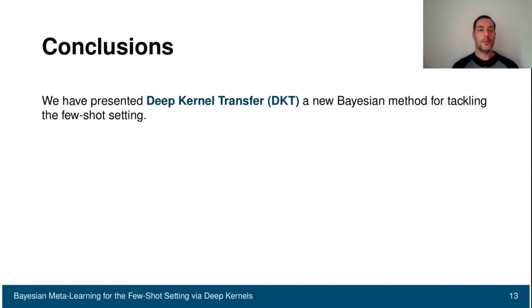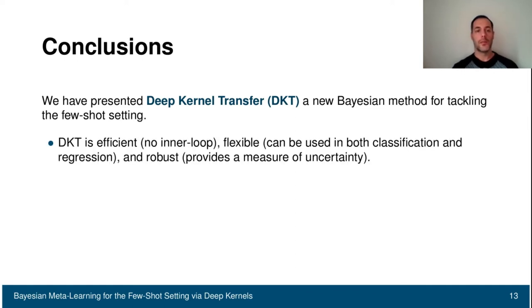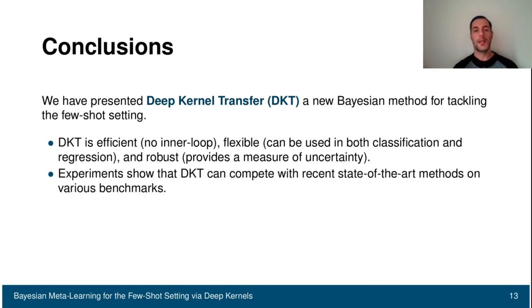In conclusion, we have presented deep kernel transfer, or DKT, that is a new Bayesian method for tackling the few-shot setting. We see that DKT is quite efficient since it doesn't require any inner loop optimization, it's flexible since it can be used for both classification and regression, and it's robust since it can provide a measure of uncertainty. Experiments have shown that DKT can compete with recent state-of-the-art on various benchmarks.